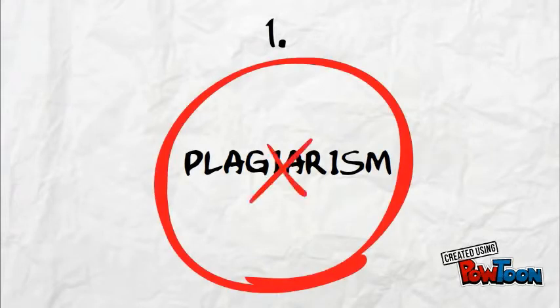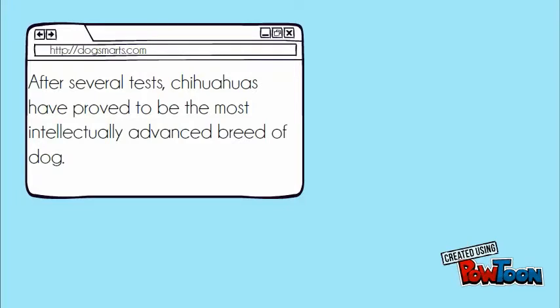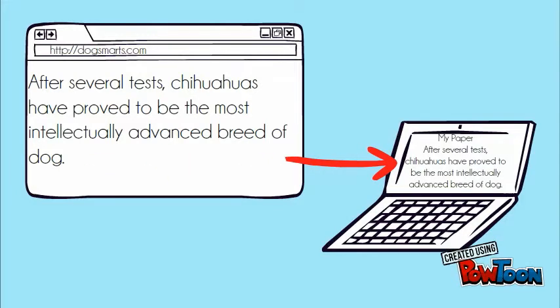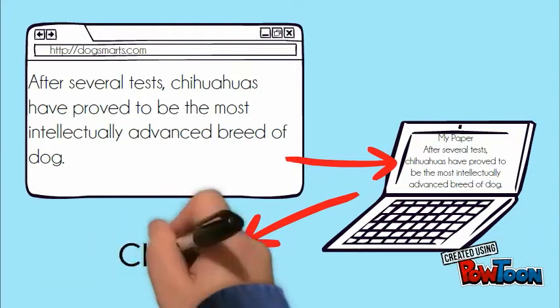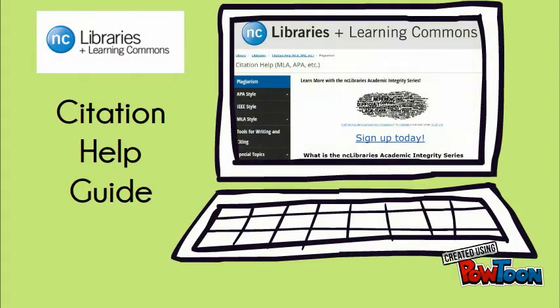Why should you cite? Citing your sources is an essential piece of the research process for two very important reasons. First, citing your sources is essential to avoiding plagiarism in your work. What is plagiarism? Basically, it's passing off someone else's work or ideas as your own. Check out the Niagara College Library's Citation Help Guide to learn more about different types of plagiarism and find some useful tools.